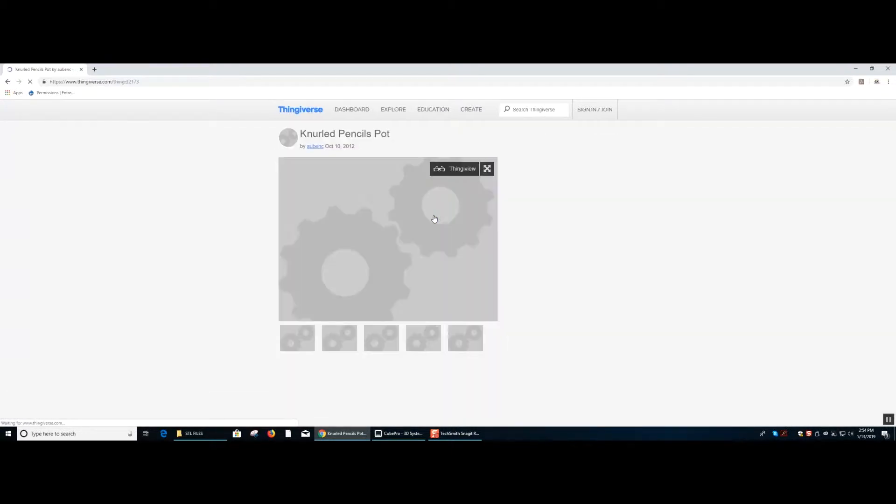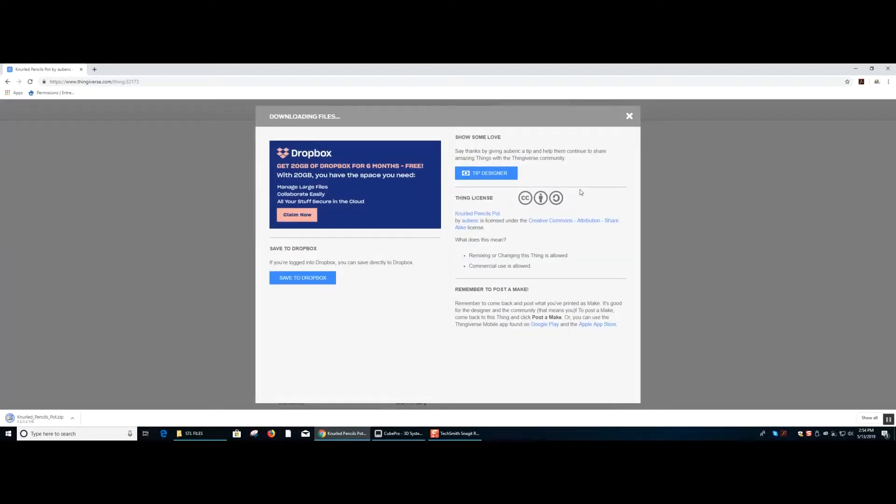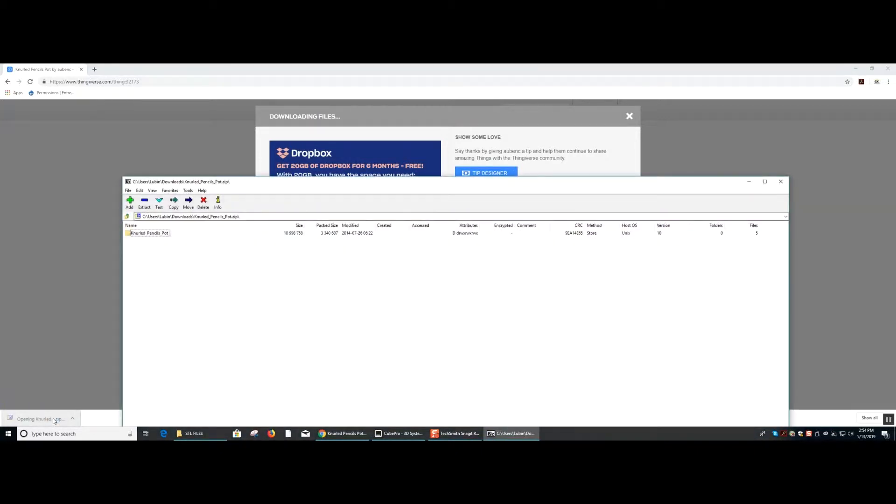Once you find a model that you would like you can click on it and hit the download all files icon in the mid to right section of the computer screen. As you can see in the bottom left corner, the STL file will appear downloaded.